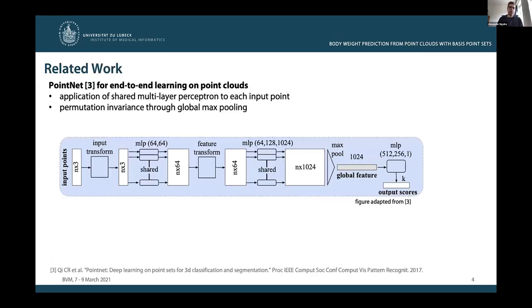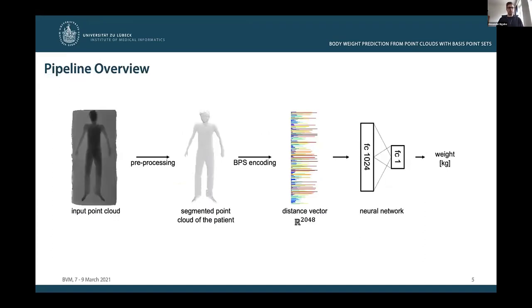A very popular approach for end-to-end learning from point clouds is the PointNet architecture, which could easily be adapted to the problem of weight estimation. PointNet applies a shared multi-layer perceptron to each input point individually and achieves a representation which is permutation invariant with respect to the input points by applying a global max pooling operation. In order to reduce model complexity and achieve faster training and inference times, in our work we pursued a different approach to end-to-end learning from point clouds, namely the concept of basis point sets, which we integrated into our weight estimation pipeline.